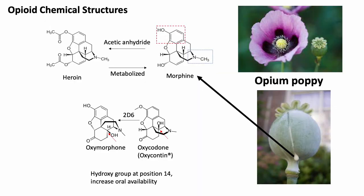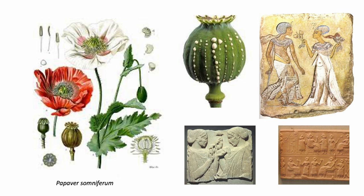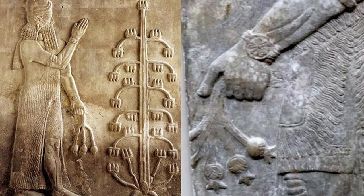OxyContin is chemically related to heroin. Heroin, morphine, and oxycodone — which is the chemical name for OxyContin — are all opioids, meaning they are derived from the opium poppy plant and interact with the body's opioid receptors to provide pain relief and potentially induce euphoria, meaning a feeling of happiness. Opium derived from the poppy plant has been used for its medicinal properties for thousands of years. Ancient civilizations in Mesopotamia, Egypt, and Greece were familiar with its pain relief properties, with the Sumerians mentioning the 'joy plant' as early as 4000 BC.